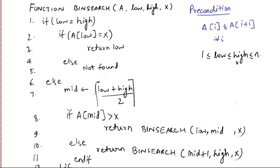Here is the pseudo code of the binary search where the input is of size 1 to n, present in an array. The range of the array is considered via indices: low will be pointing at the first index, that is A[1], and high will be pointing at A[n]. X is the query — whether that element is present in the array or not. Lines 1 to 5 handle the single element case: if that element is present we return its index, otherwise we say it is not found.